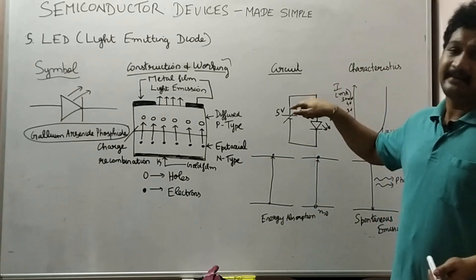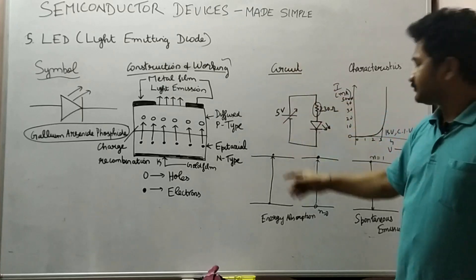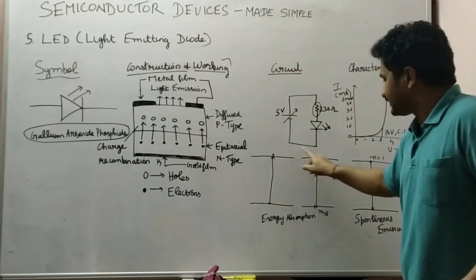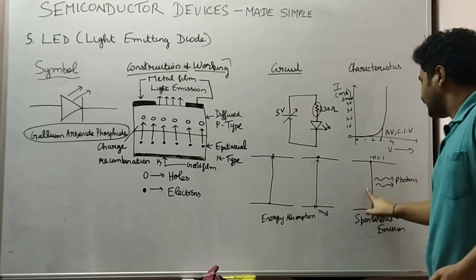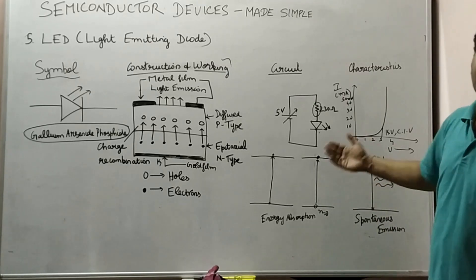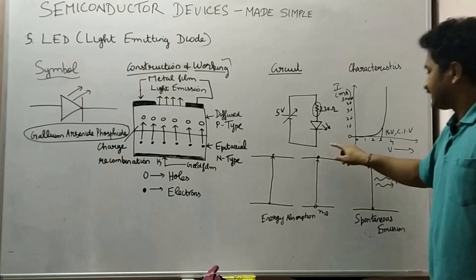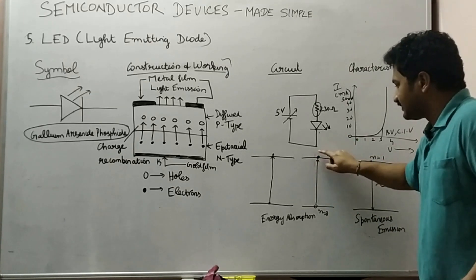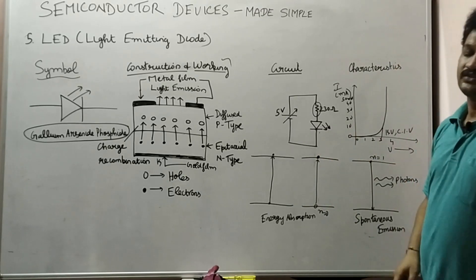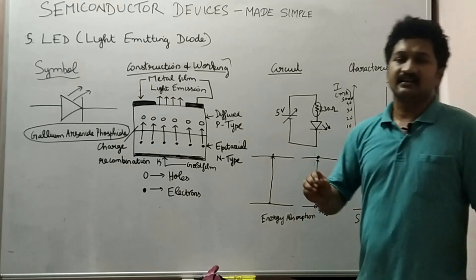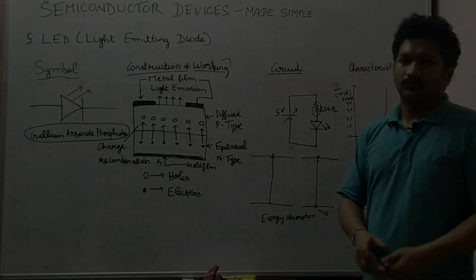In the LED, the electron reaches a higher energy level, absorbs energy, and while returning to the lower energy level it emits photons — only then does charge recombination take place. The time for which it stays in the higher energy level is called the recombination time. This completes the working of a light emitting diode.